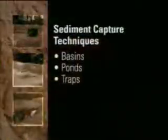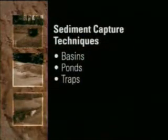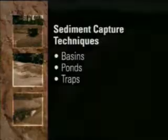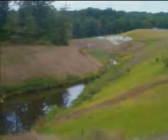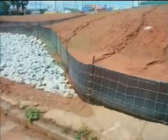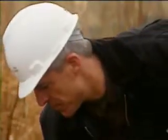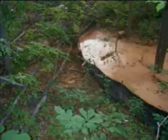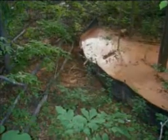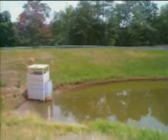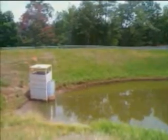The second category of controls are designed to capture sediment that has already been picked up by runoff. These include sediment basins, ponds, and traps designed to hold runoff water for at least 24 hours, which is enough time for most of the sediment to drop out of the water. Sediment levels should be checked regularly — when a control structure is half full, clean it out so that it continues to work properly.